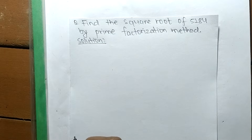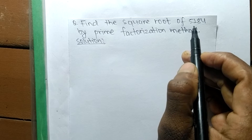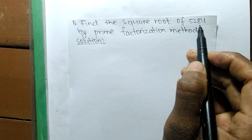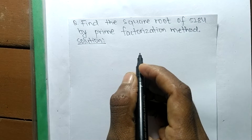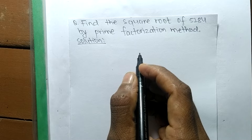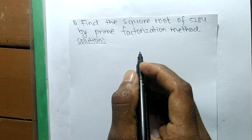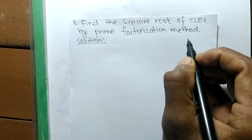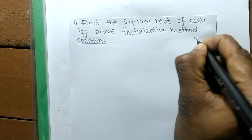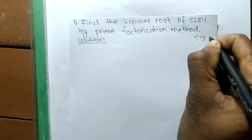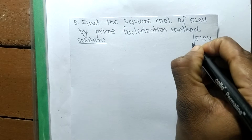Today in this video we shall learn to find the square root of 5184 by the prime factorization method. To find the square root by this method, first we have to find out the prime factors of the given number 5184.